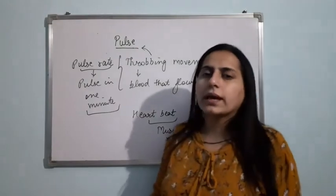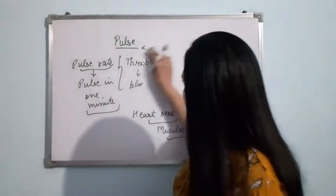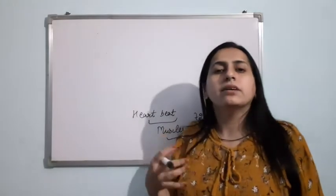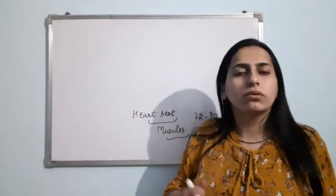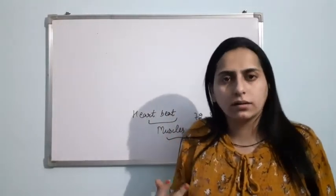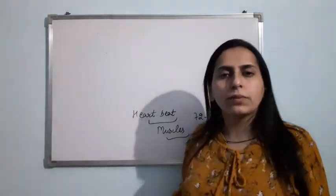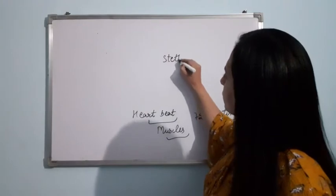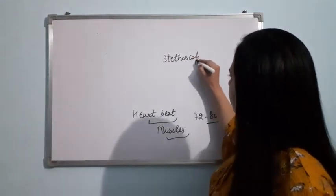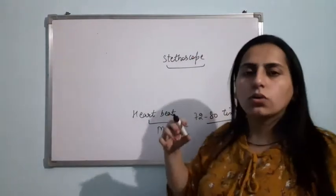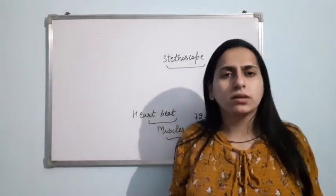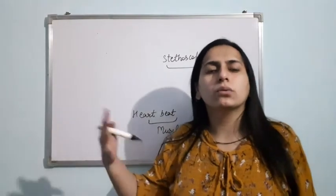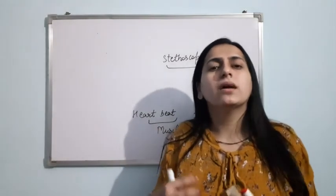Now we can measure the heartbeat. We can listen to the sound produced by the heart with the help of an instrument known as the stethoscope. A stethoscope is an instrument that you might have seen with doctors. They use this instrument to amplify the sound produced by the heart. Your heart produces two sounds that are listened to by doctors with the help of this stethoscope.